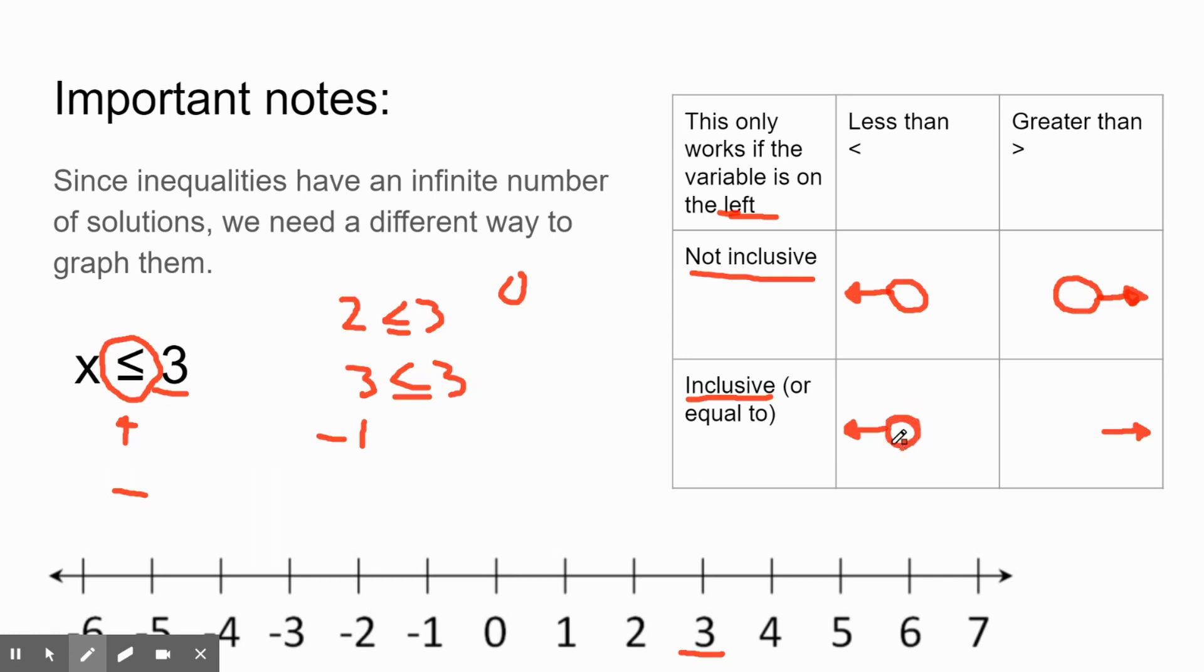If it does include the number—it's inclusive, kind of like in this example—then we're going to draw a solid point on our number line like so. Again, it doesn't matter whether it's greater than or less than. As long as it's or equal to, we're going to have this solid point like so. That means when we plot this, we know that we have a less than that's inclusive, so we know that for this example we're going to need this thing. So we're going to go back to three, we are going to draw a solid point, we are going to draw an arrow that goes to the left. Again, remember that this only works well if your variable is already on the left like it is here. If not, you just switch which direction your arrows are going and you'll be fine.